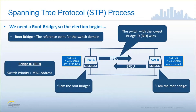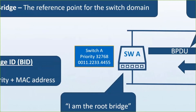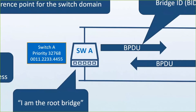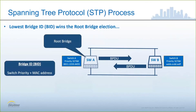Switch A has a priority of 32768, which is the default priority in Cisco switches, and a base MAC address starting with 0011. Switch B has the same default priority but a MAC address starting with AA, which translates to 1010 in numeric value. Since 1010 is higher than 0011, switch A becomes the root bridge of the topology.